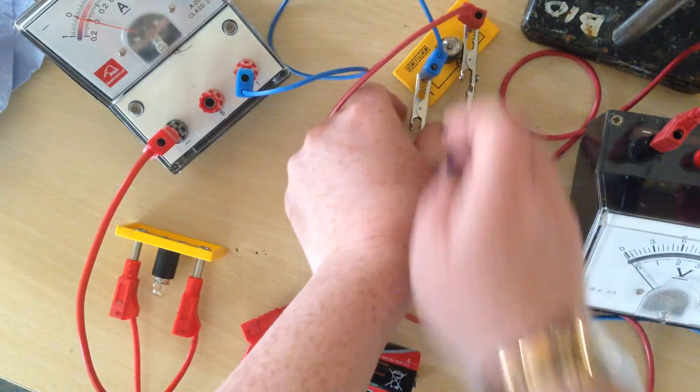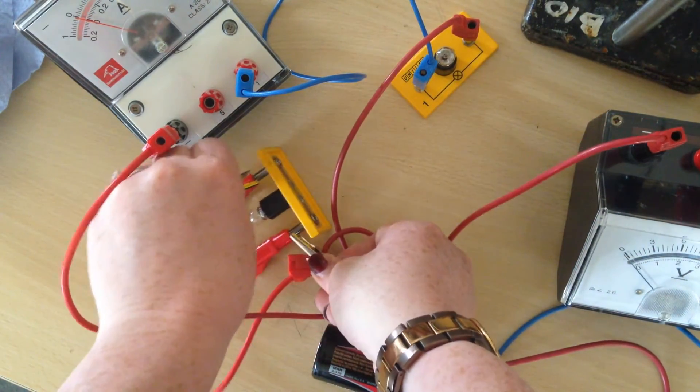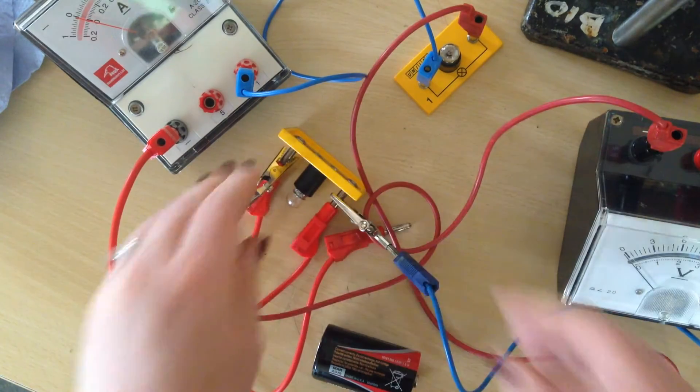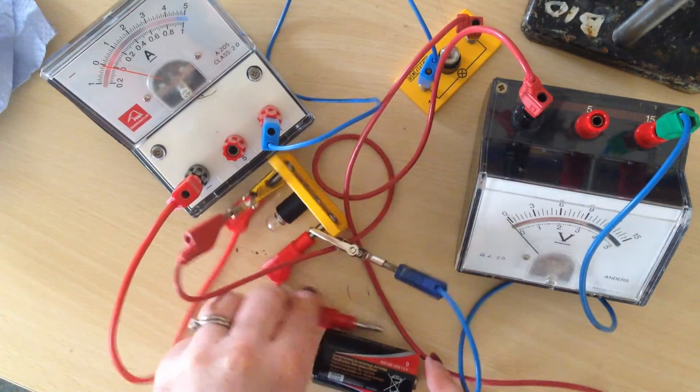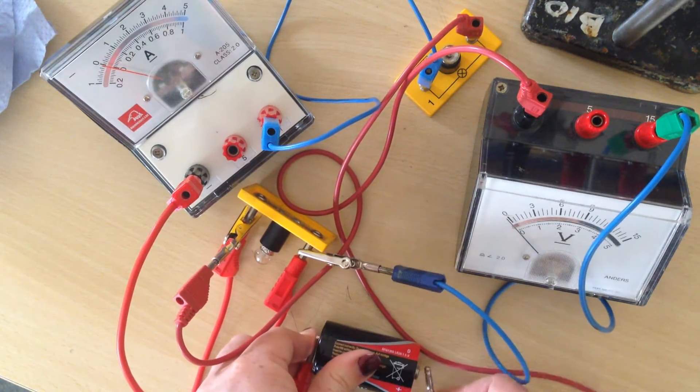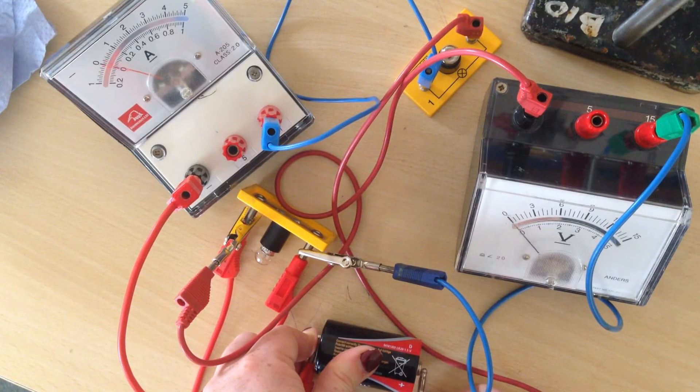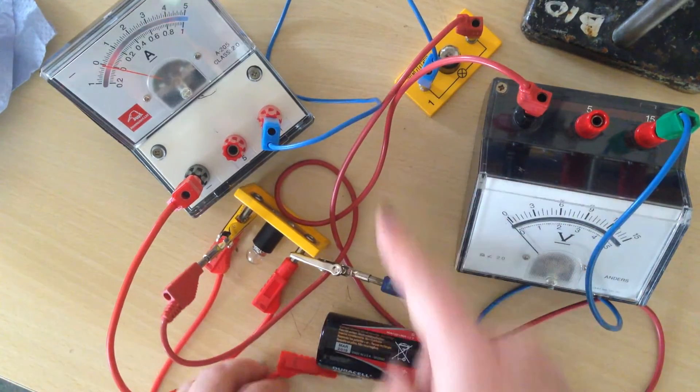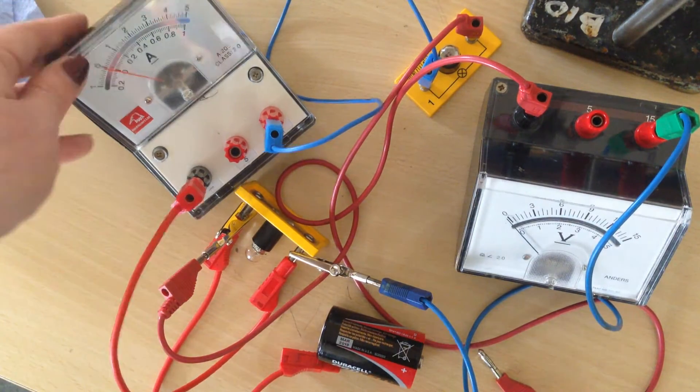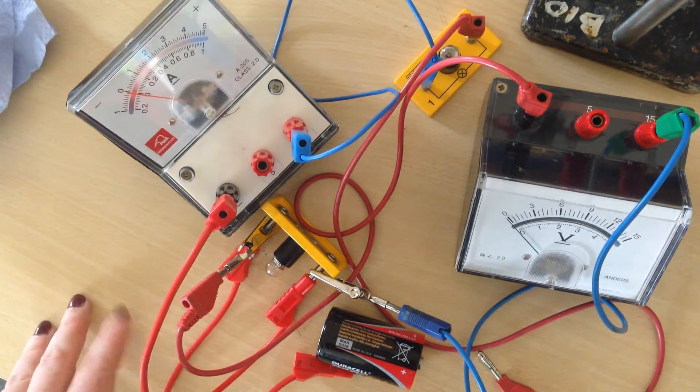So I can take the voltmeter off this bulb here, connect it across this bulb here. So I bring the ammeter and voltmeter back in, and then measure the potential difference going through there. And then the total potential difference would be the sum of this one and this one, whereas the current in a series circuit is the same no matter where you put the ammeter.